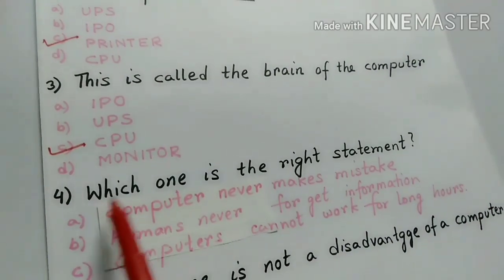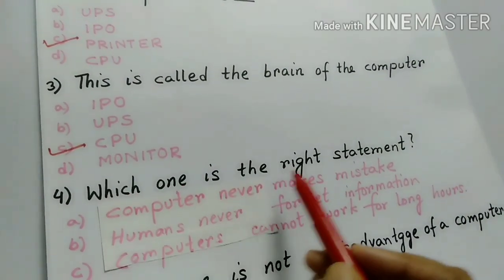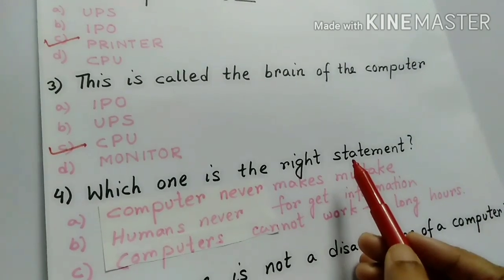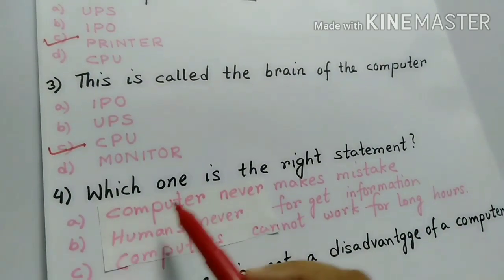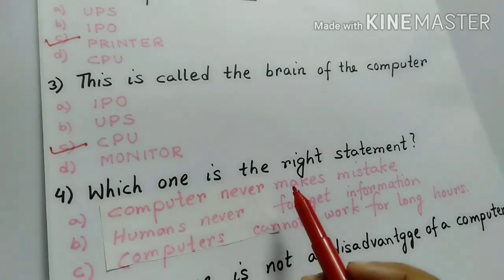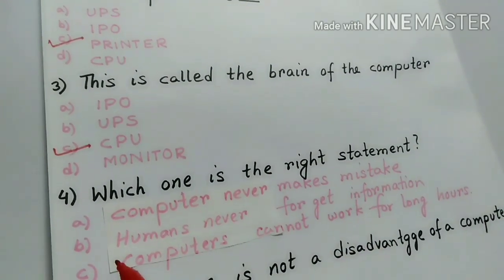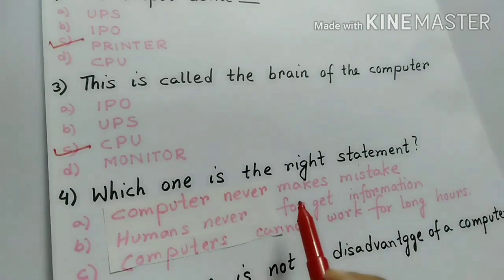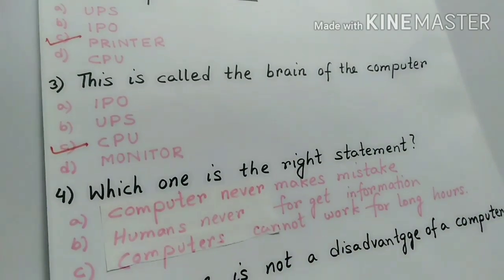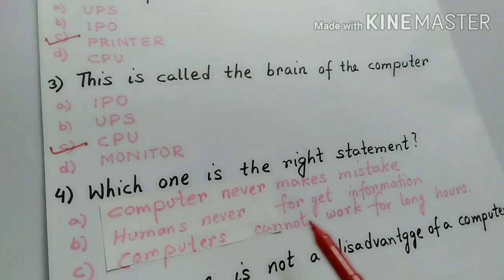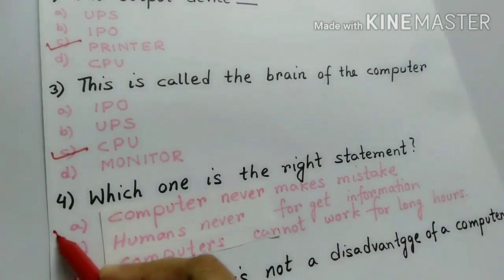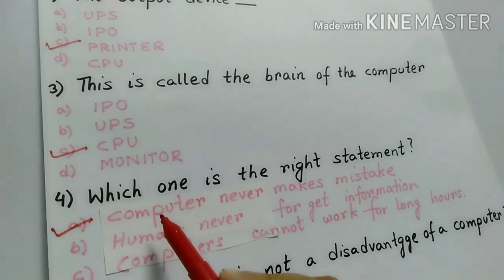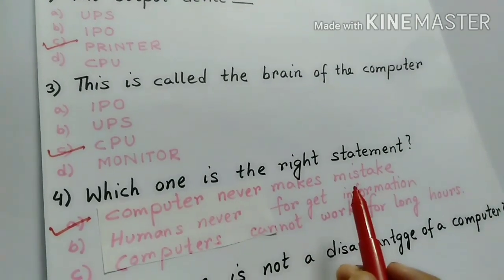Number 4. Which one is the right statement? That means you have to take the correct statement. Number A, Computer never makes mistake. Number B, Humans never forget information. And Number C, Computers cannot work for long hours. I think number A is the right statement. Computer never makes mistake. Right?